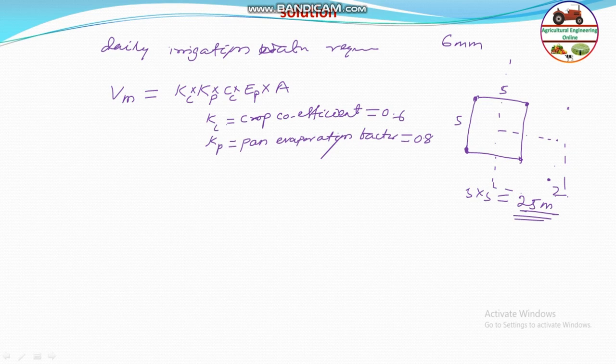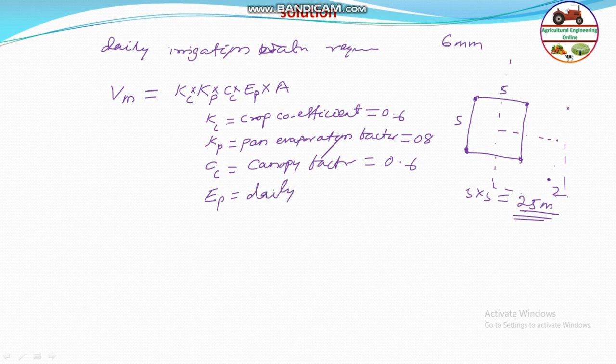The pan evaporation is measured in a controlled pan, but since the crop area is very large and the measurement is done at a small area, a correction coefficient is needed — this is the pan evaporation factor Kp. Additionally, Cc is the canopy factor, given as 0.6. Ep, the daily pan evaporation, is used in millimeters.